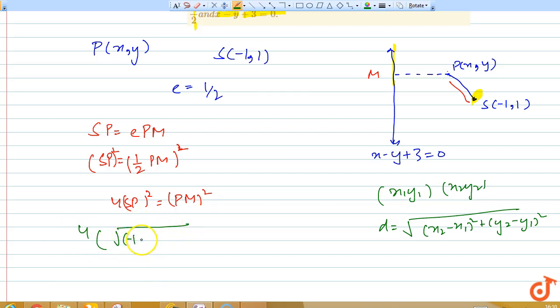And we have PM. PM is the distance of a point from a line. So we know that if we have given a point (x₁, y₁) and a line ax + by + c = 0.